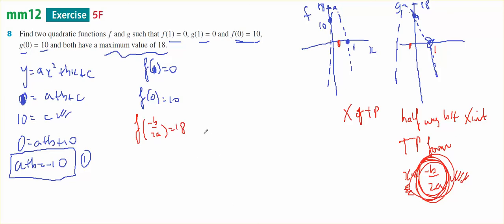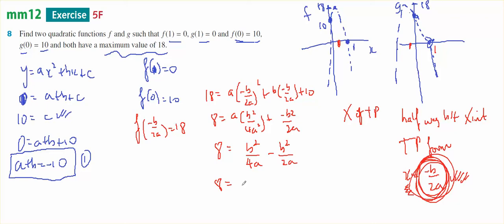And that will give me my second equation. So 18 equals a times minus b over 2a squared plus b minus b over 2a plus 10. So 8 equals a times b squared over 4a squared plus minus b squared over 2a. So 8 equals b squared over 4a minus 2b squared over 4a.